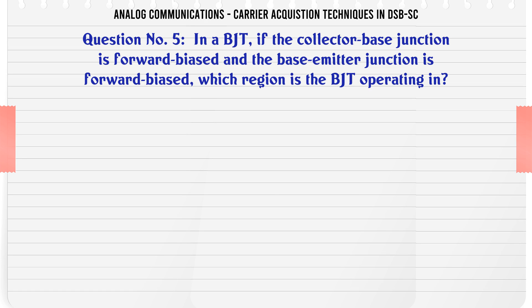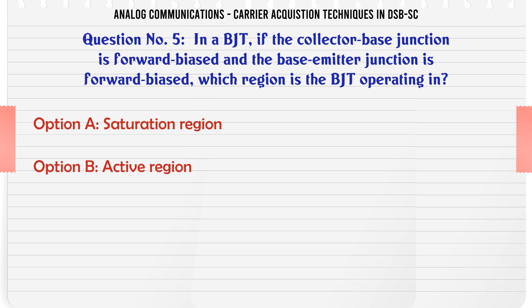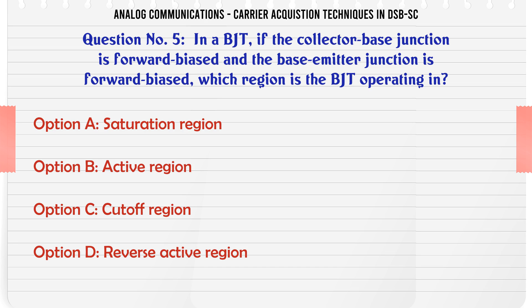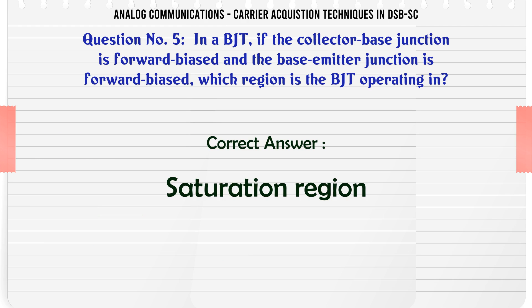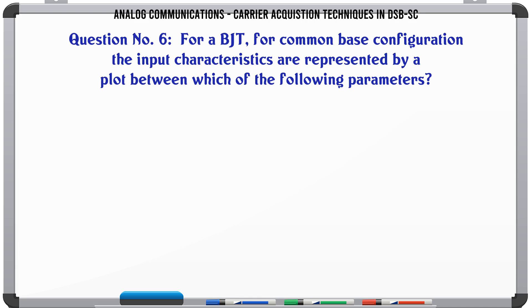In a BJT, if the collector-base junction is forward biased and the base-emitter junction is forward biased, which region is the BJT operating in? A. Saturation region. B. Active region. C. Cutoff region. D. Reverse active region. The correct answer is Saturation region.